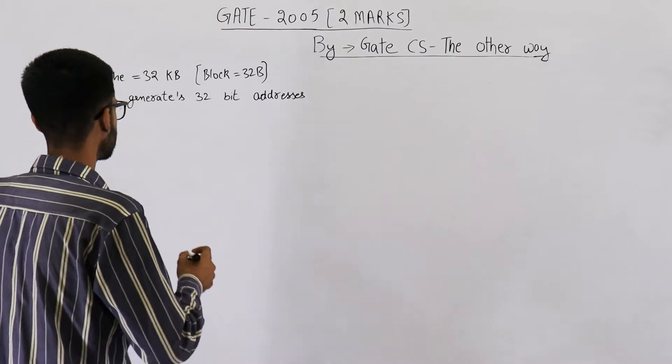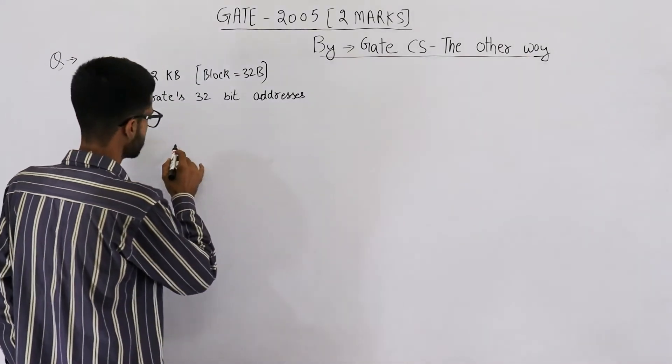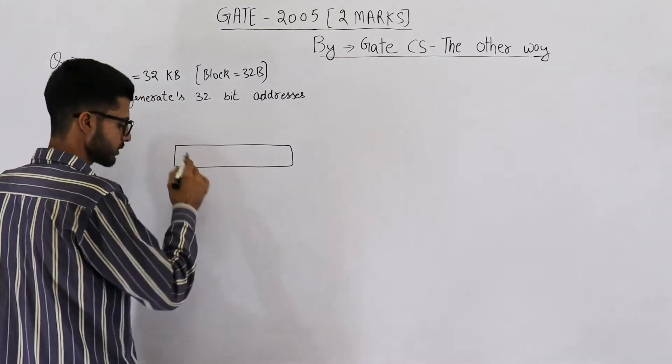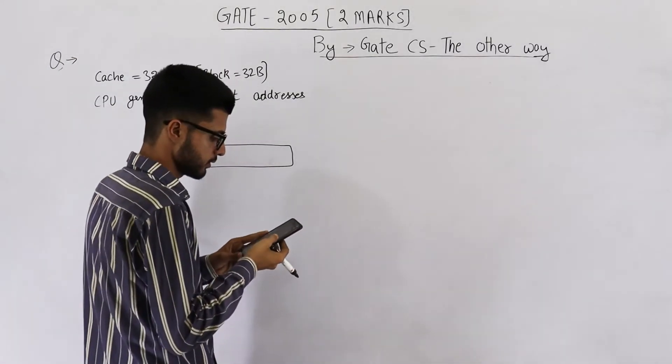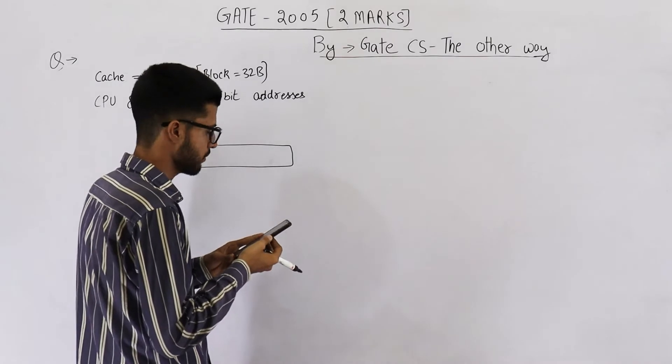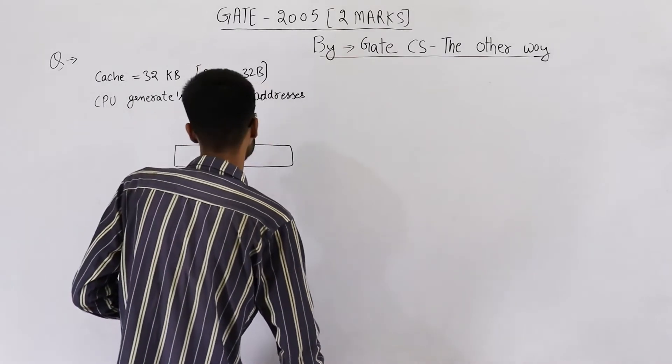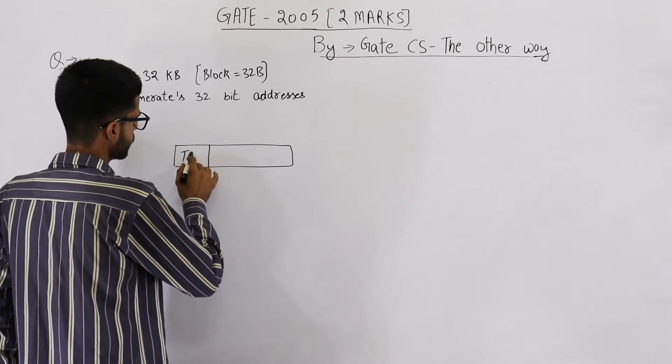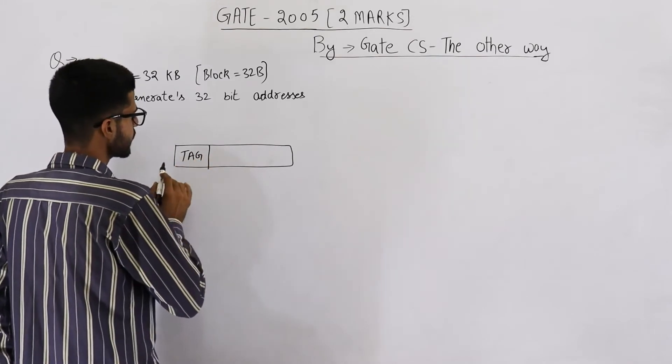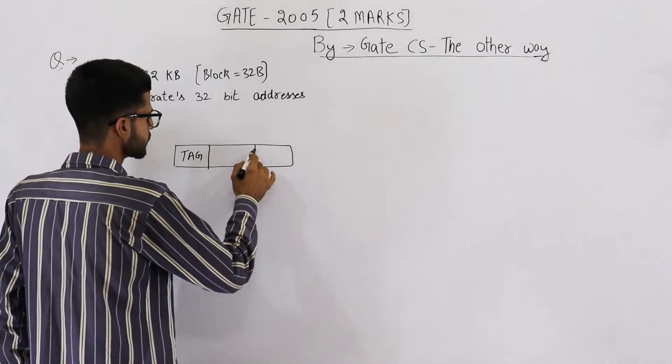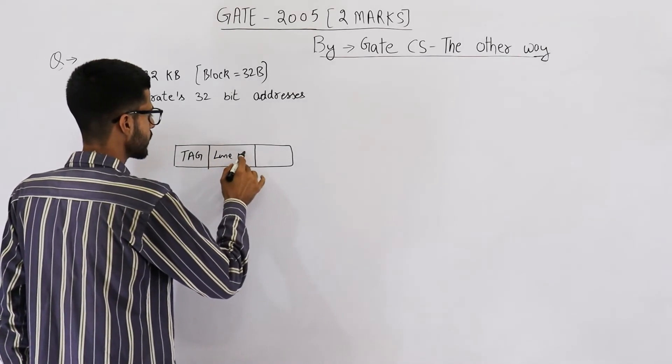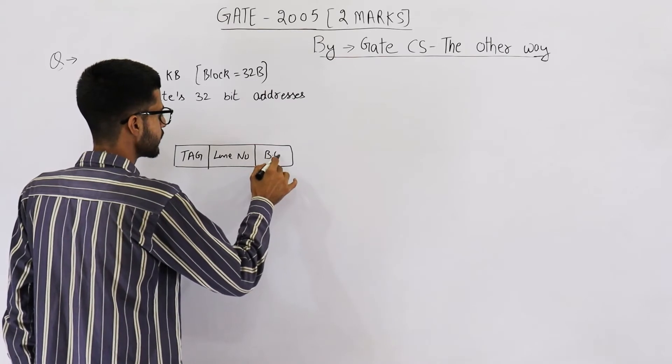So you know in case of direct mapped cache, this is a direct mapped cache. In the question it's mentioned, consider a direct mapped cache. First line specifies it's a direct map. So we divide physical address into three fields: that is tag, line number, and block offset.